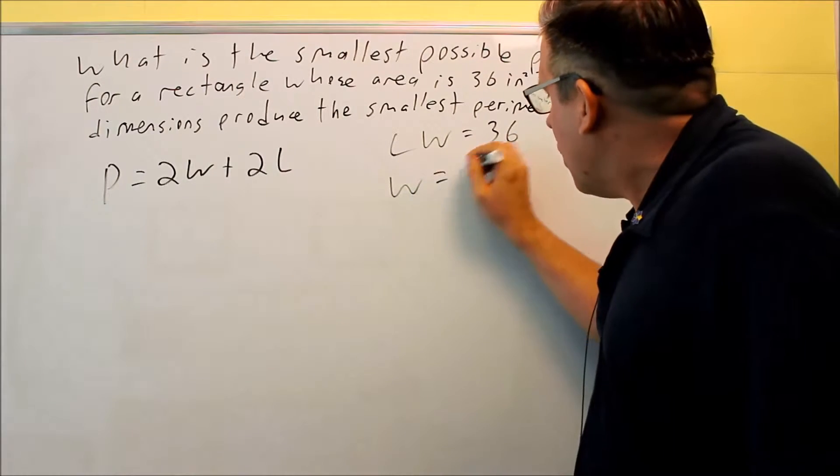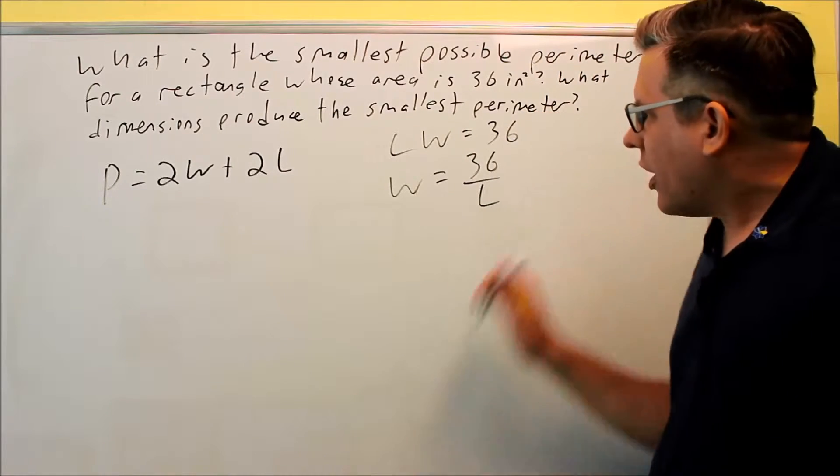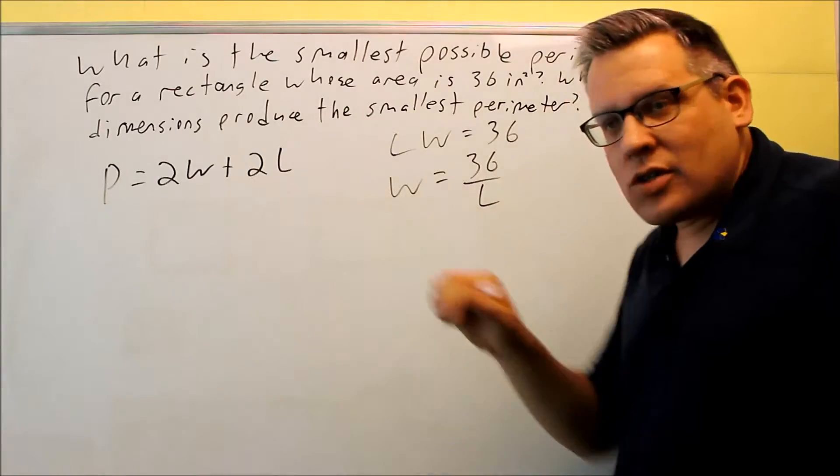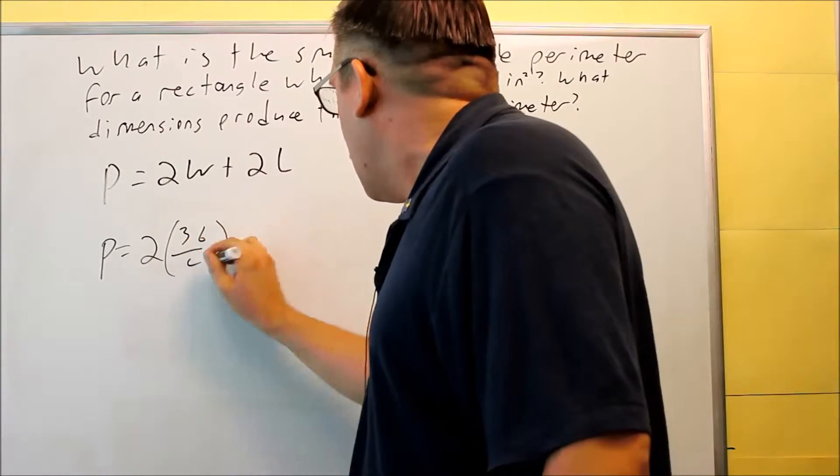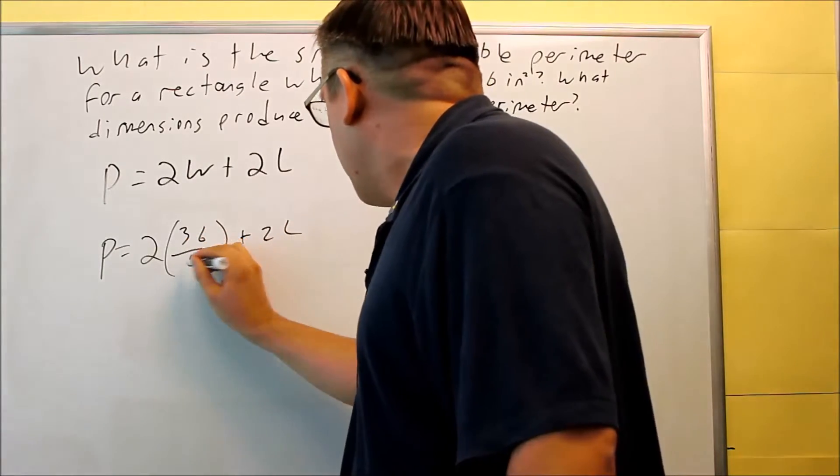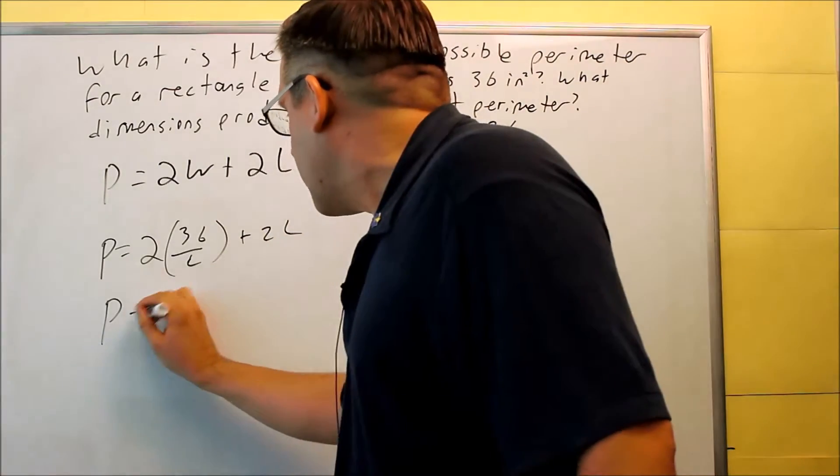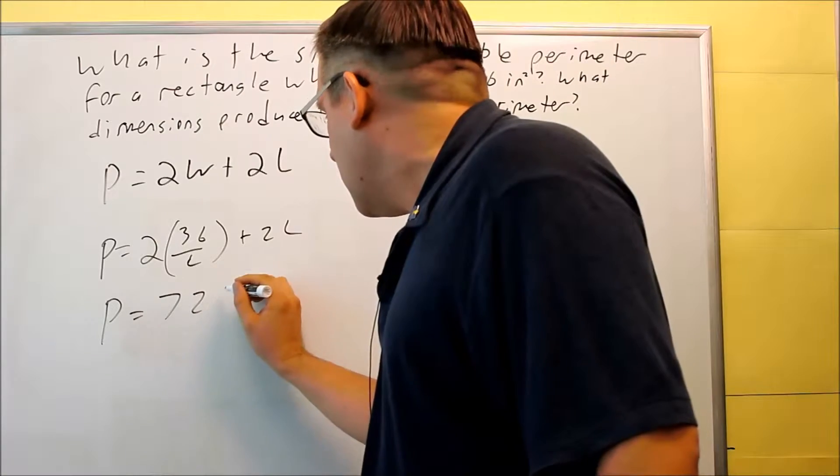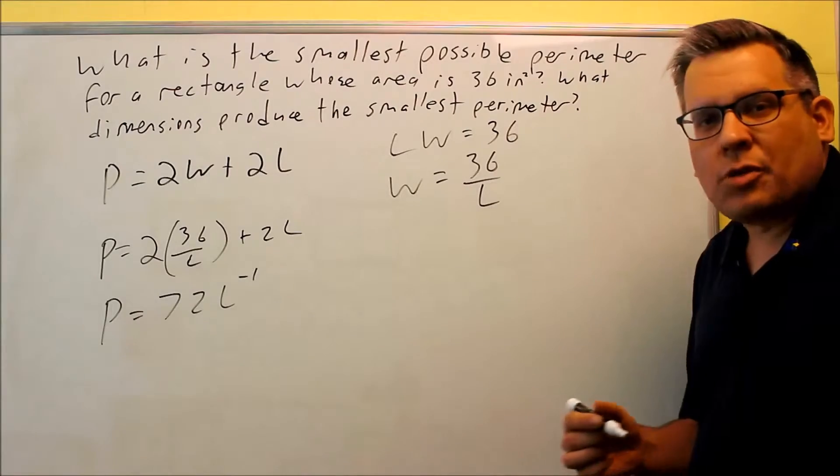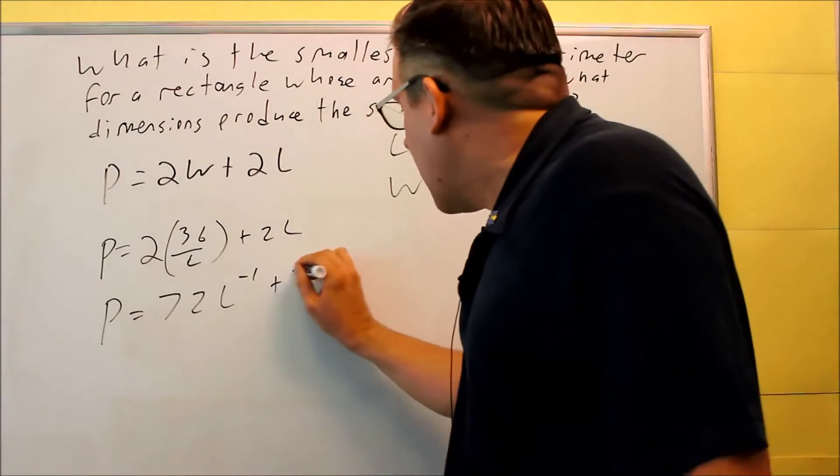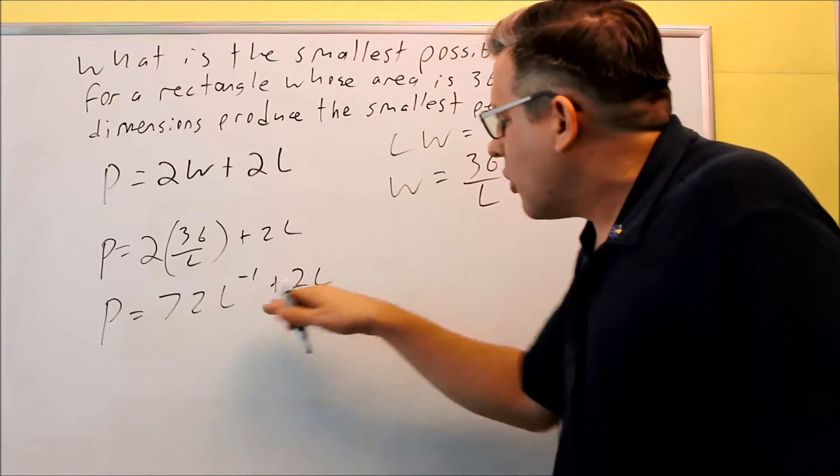So for this I'm going to solve for W, W = 36/L. Then I'm going to put 36/L into here in place of W. So P = 2(36/L) + 2L. And then I want to simplify this. So this part right here is going to turn into 72L^-1, because 2 times 36 is 72, and L is in the bottom. I'm going to write it with a negative exponent to make it easier, because eventually I'll be doing a derivative using the power rule. Then I have plus 2L. So now I can do this because I have one single variable.